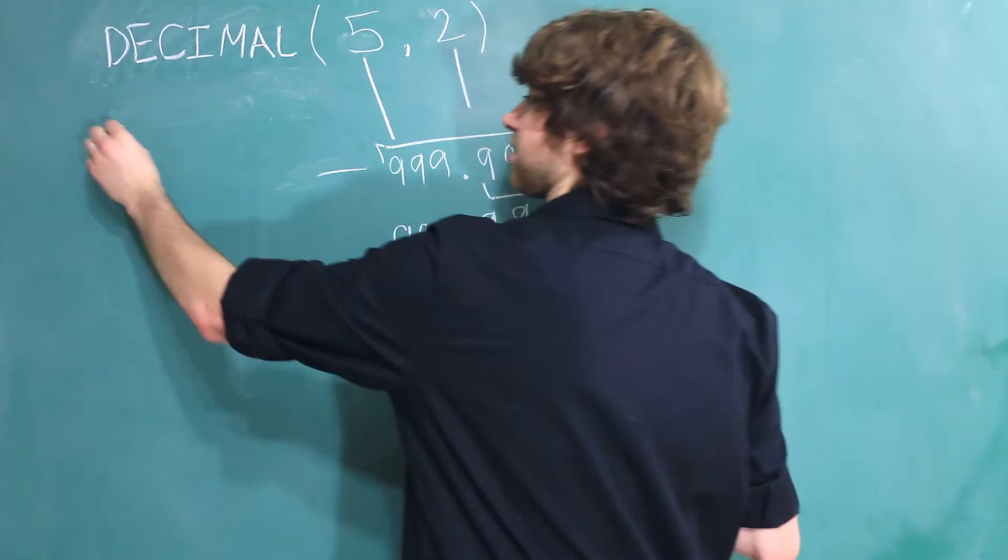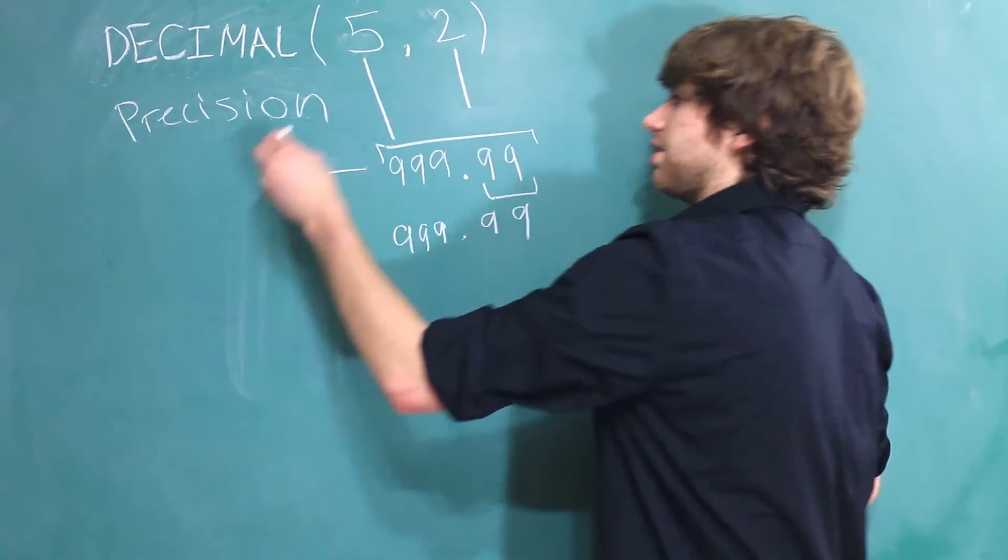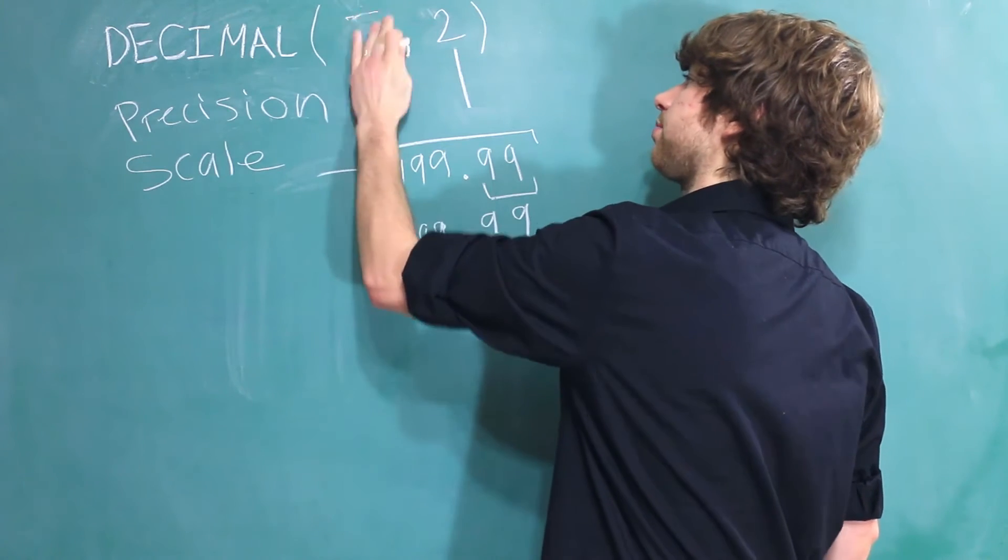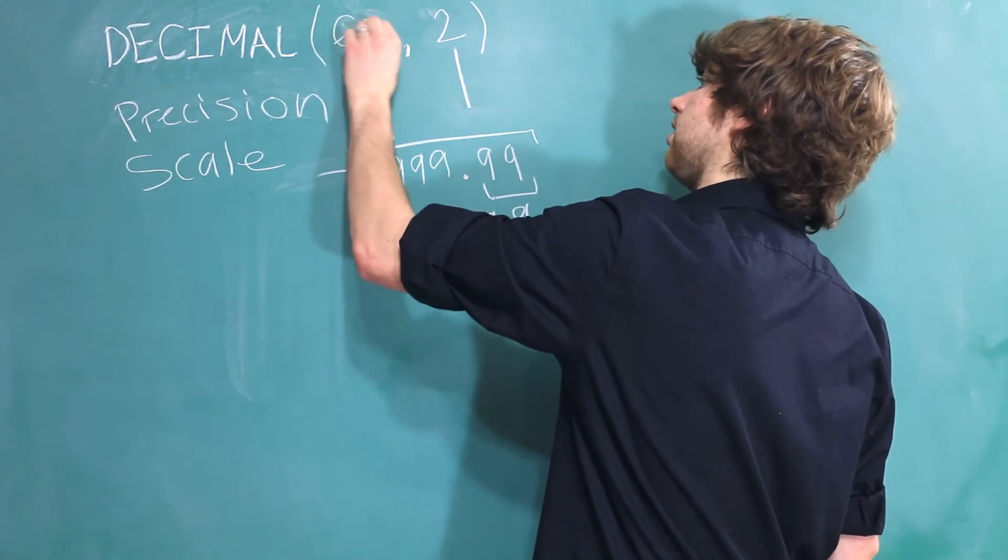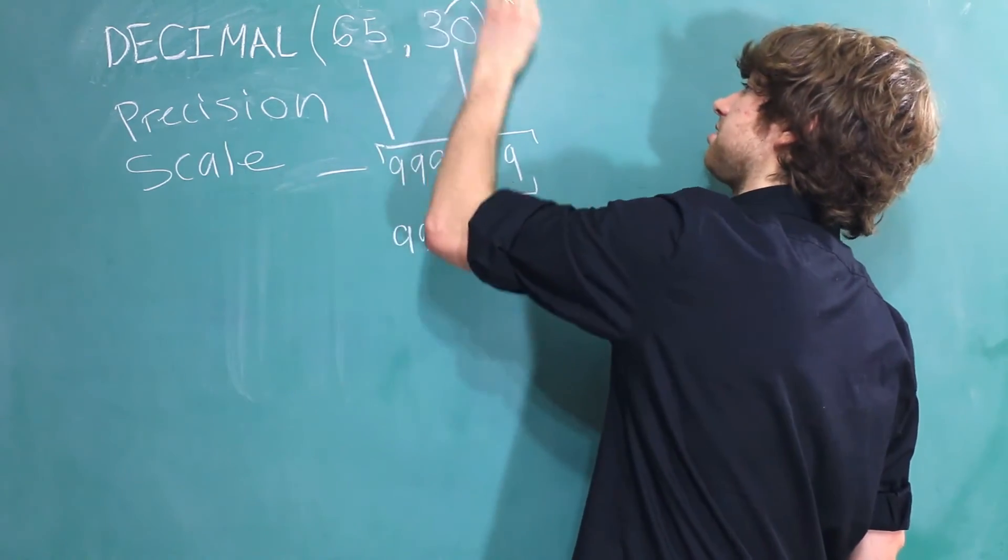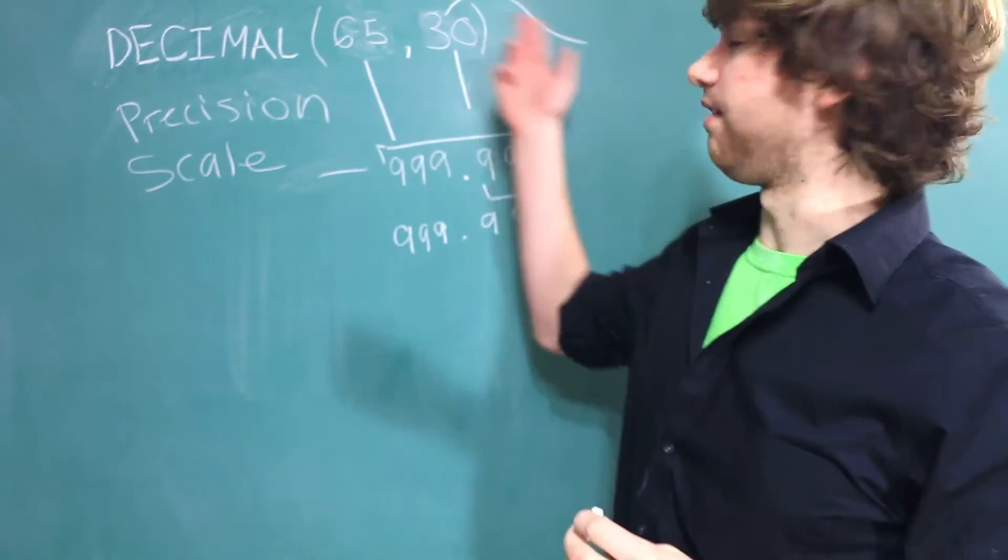Now this number here is known as the precision. This number is known as the scale. Now the max values for these, this one is 65 and this one is 30. And obviously this number is going to have to be bigger than this number.